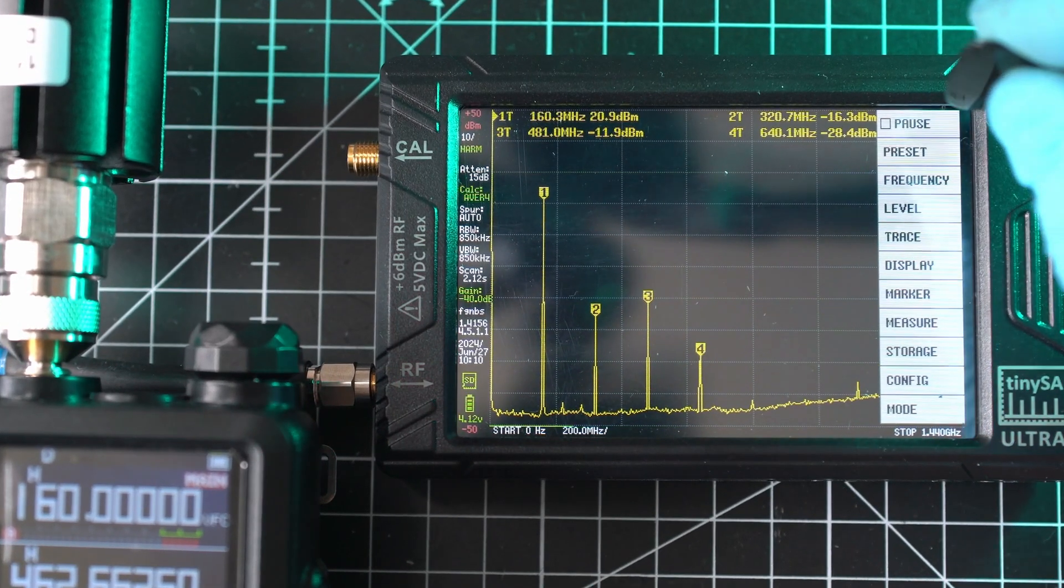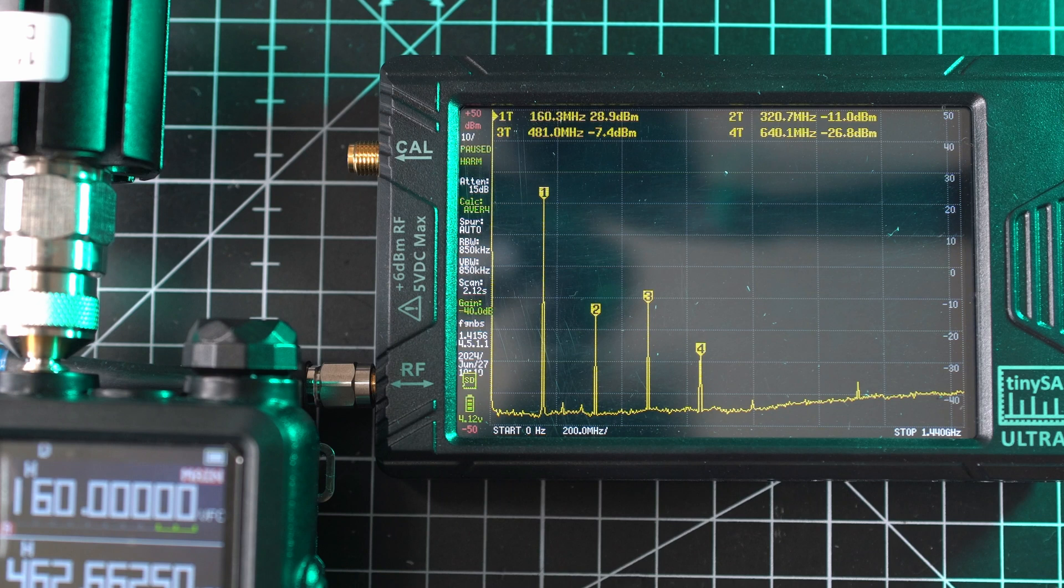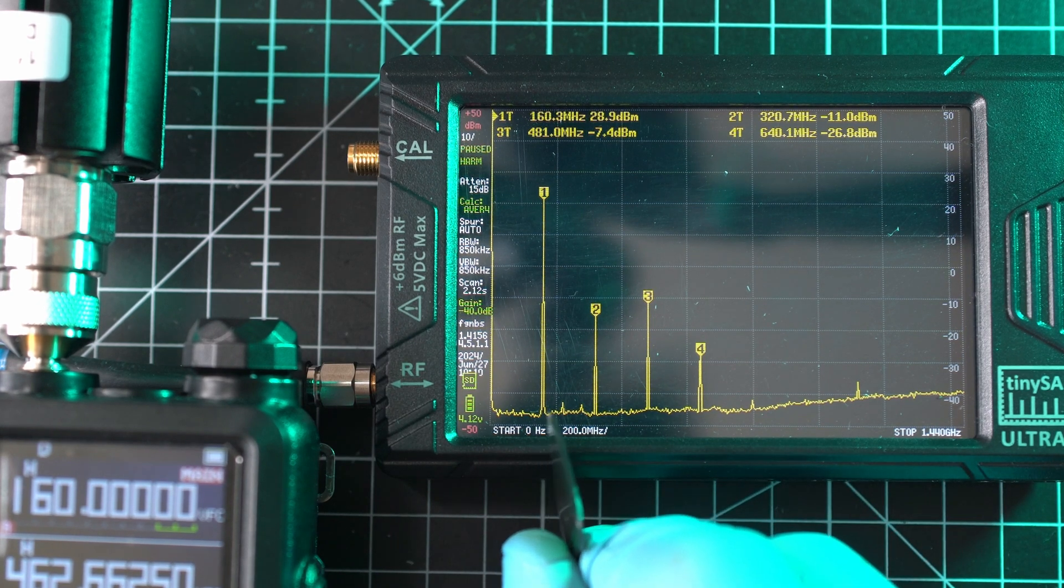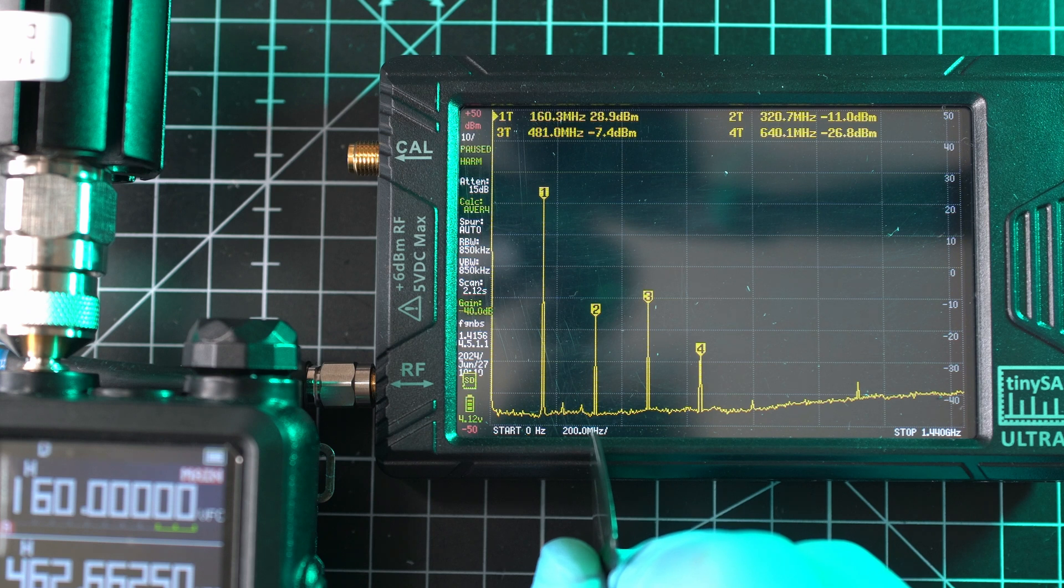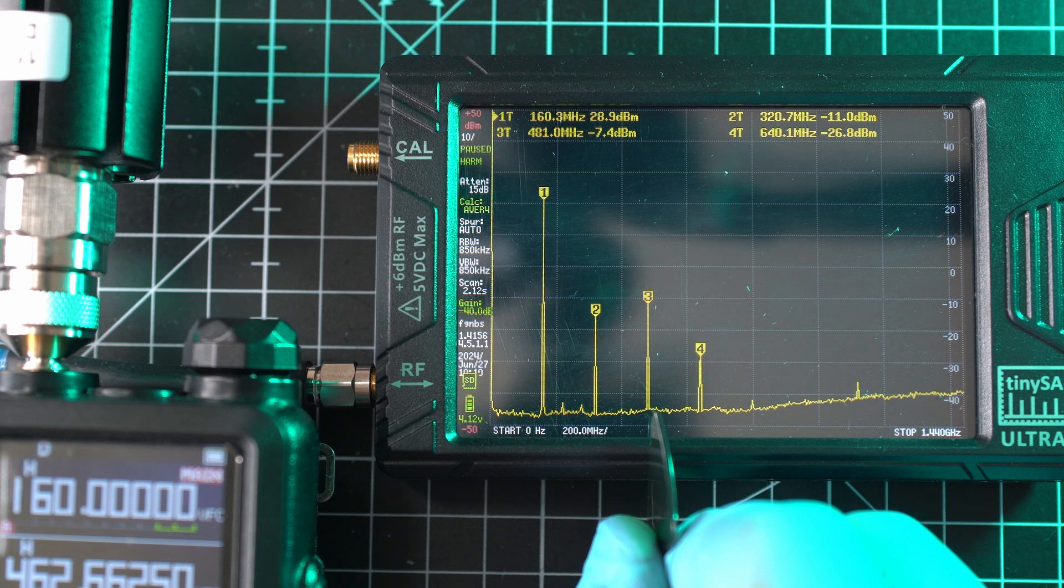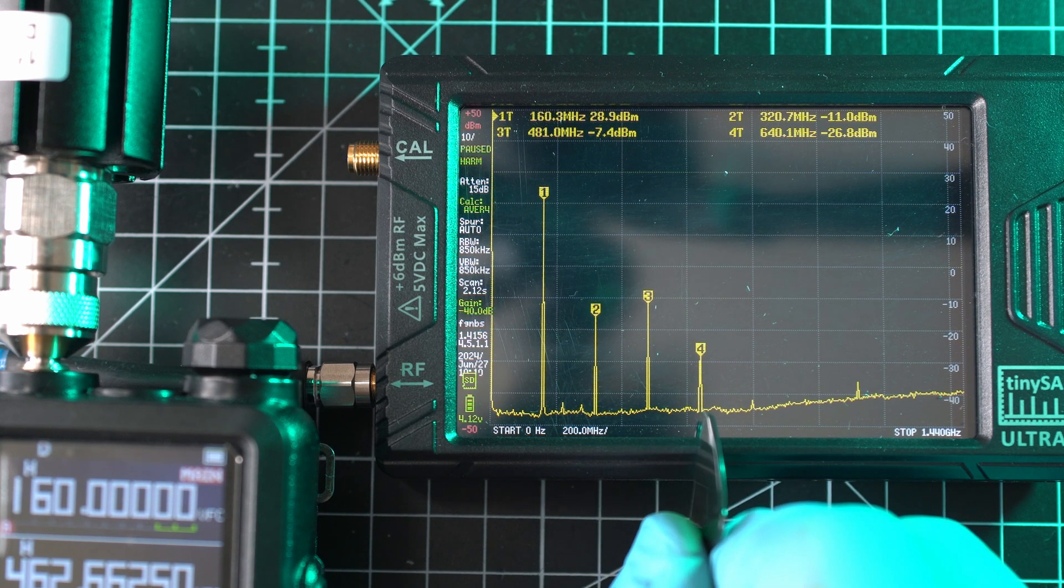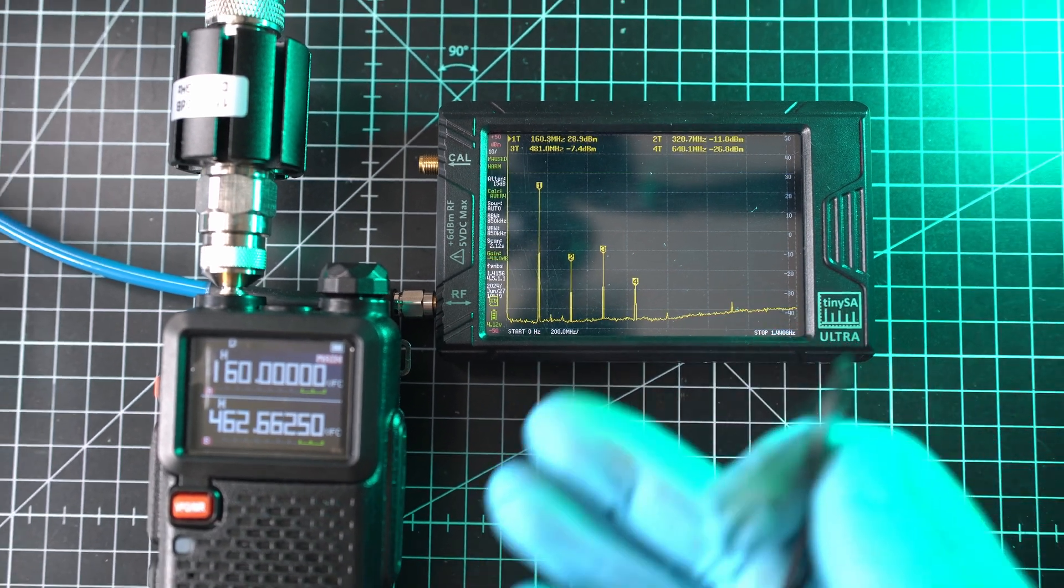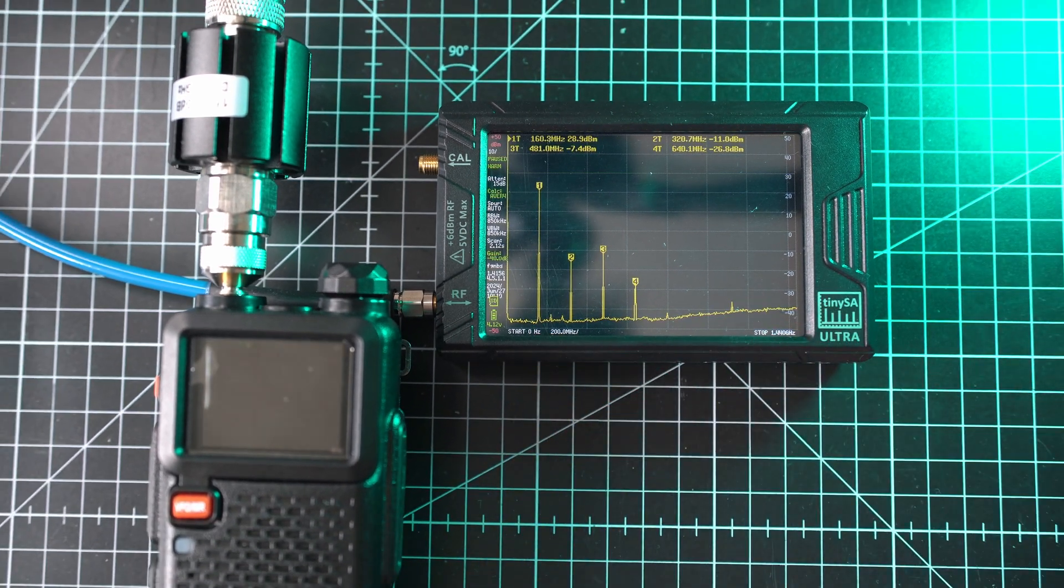Here we have three extra signals picked up. And neither of them is lower than 40 dBm from primary signal. Second is on 320 MHz at negative 11 dBm. Third on 481 MHz at negative 7 dBm. It is actually stronger than second signal. And fourth signal on 640 MHz at negative 26 dBm. This renders radio dirty, as its spurs are way stronger than required.